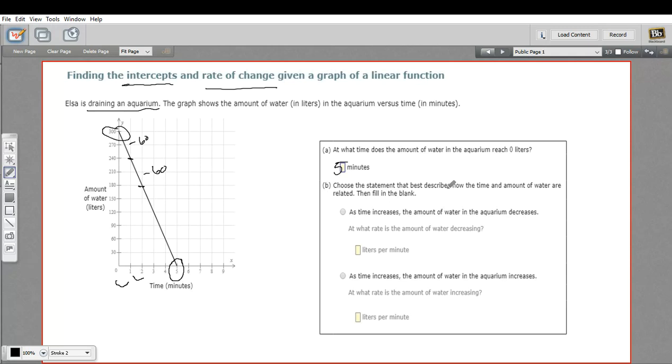And B says, choose the statement that best describes how the time and amount of water are related, and then fill in the blank. So as time increases, the amount of water decreases or increases. And we can see it decreases. And that makes sense. As the time goes up, the amount of water should go down because we're draining the thing. So we're going to choose, as time increases, the amount of water decreases.